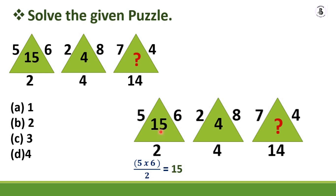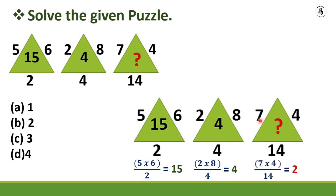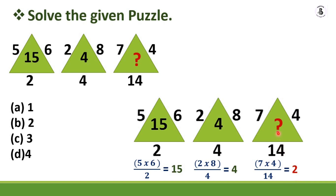Following the same pattern for the second triangle: 2 multiplied by 8 equals 16, divided by 4 (the base) equals 4 — which satisfies the condition. For the third triangle: 7 multiplied by 4 equals 28, divided by 14 (the base) equals 2. So the question mark is replaced by 2, which is option B — the right answer.